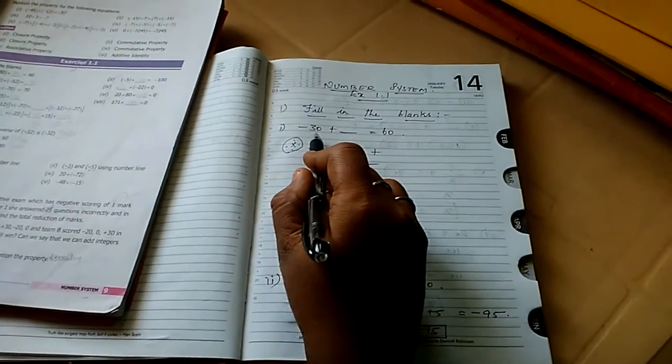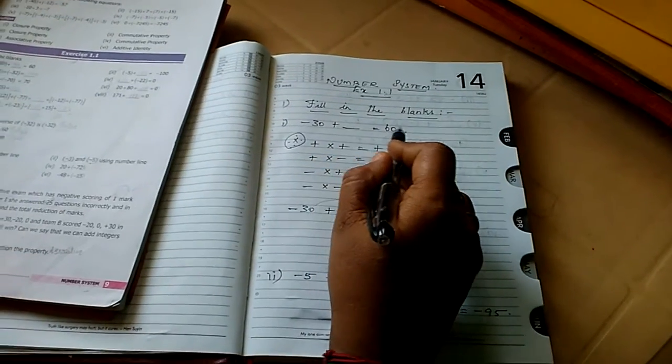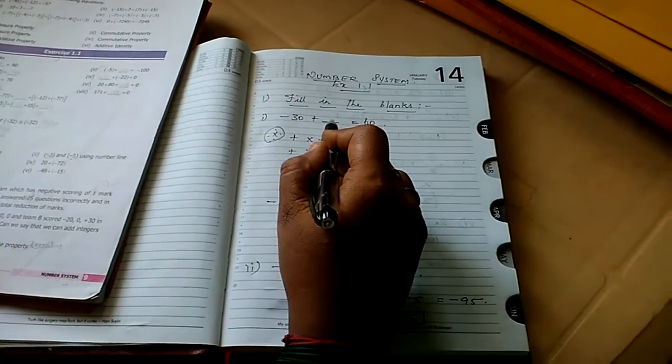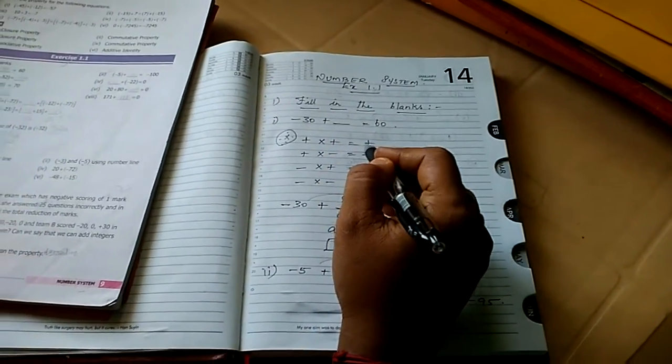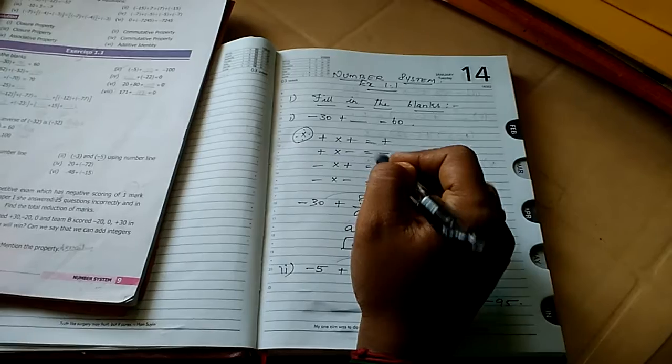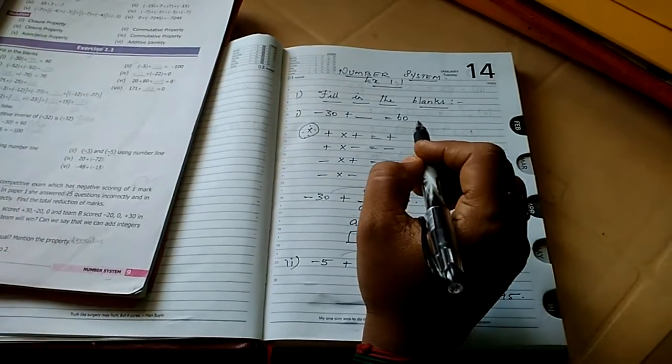Question number 1: minus 30 plus dash equal to 60. So now we are going to find out in the dash what it will come here. So before going to the solution, definitely you must understand an important formula children. So please know this formula.